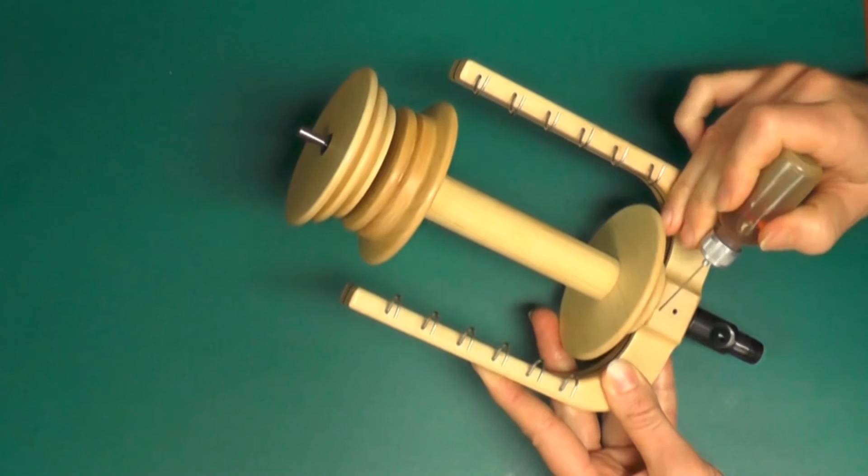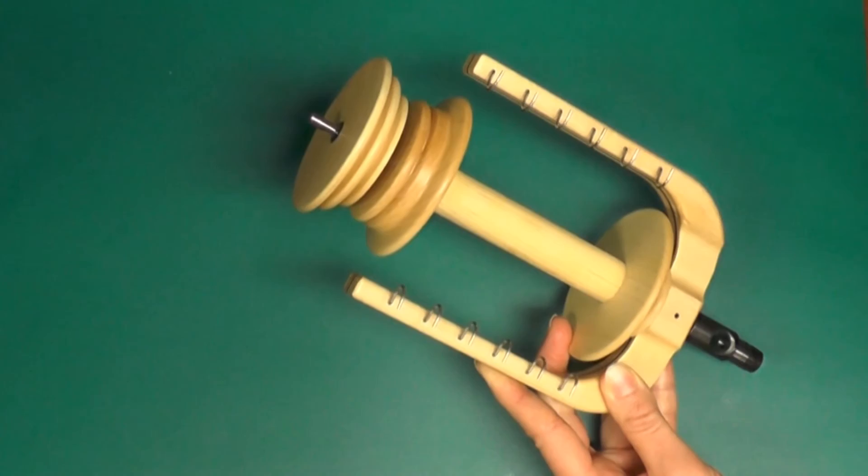For bulky bobbins, you might need to apply some oil halfway through the bobbin. Regular cleaning and oiling will ensure the longevity of your wheel and give you hours of smooth spinning.